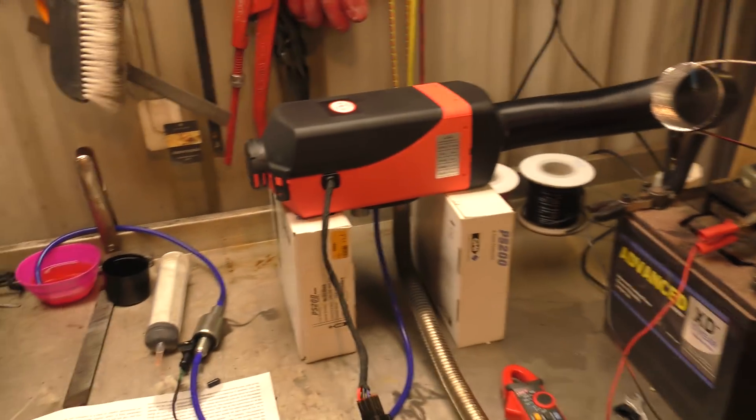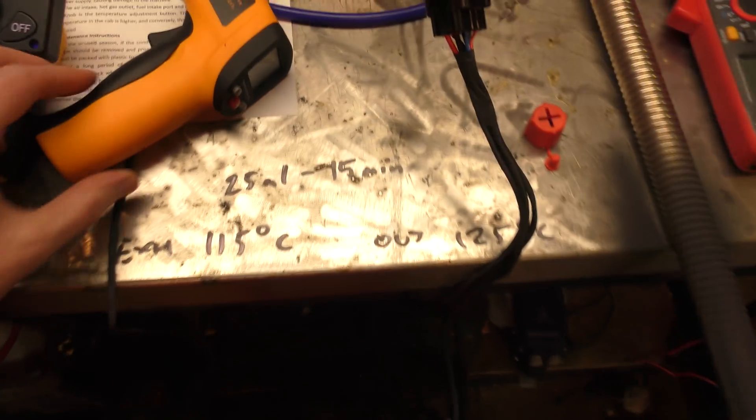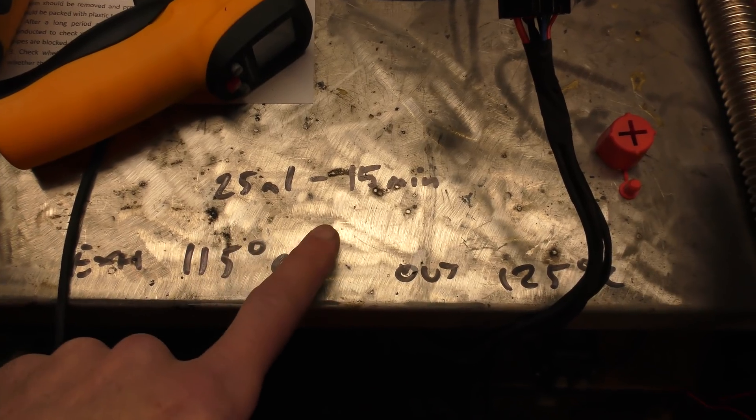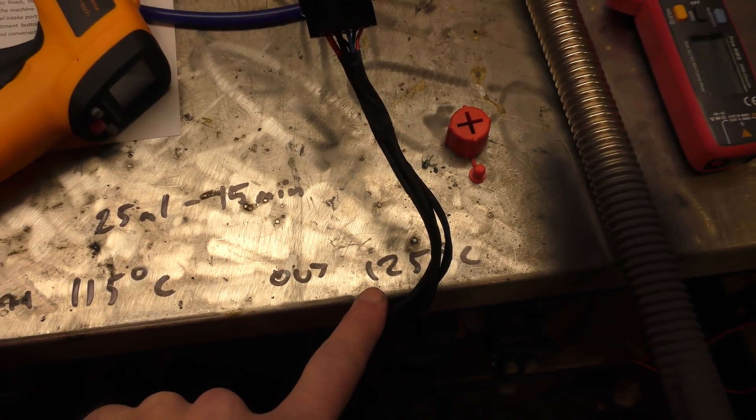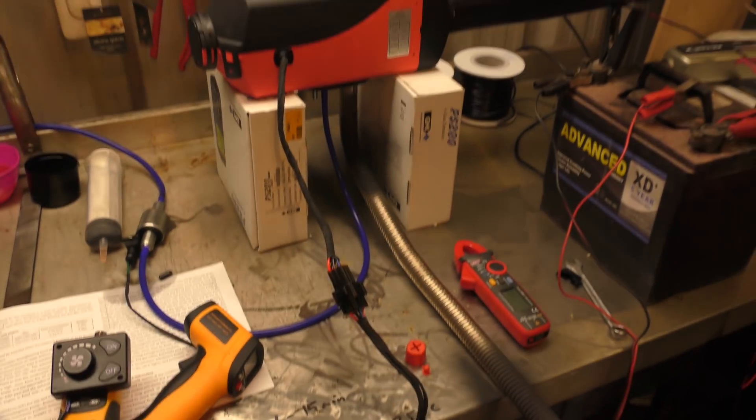So that was one of the main questions, how much fuel does it use? I even wrote it down. 25 milliliters, 15 minutes, exhaust temperature 115, outlet temperature 125. So that's question one.